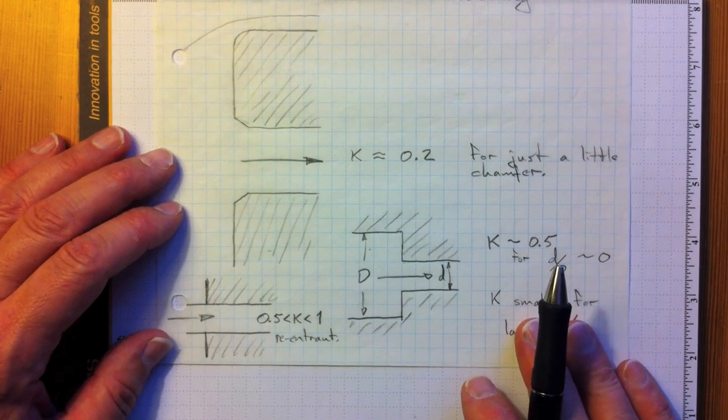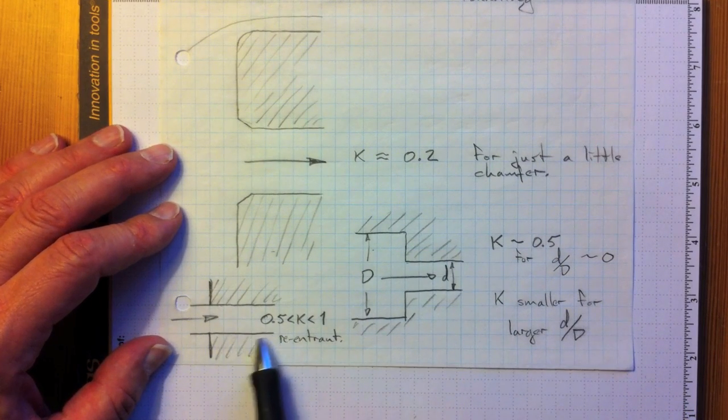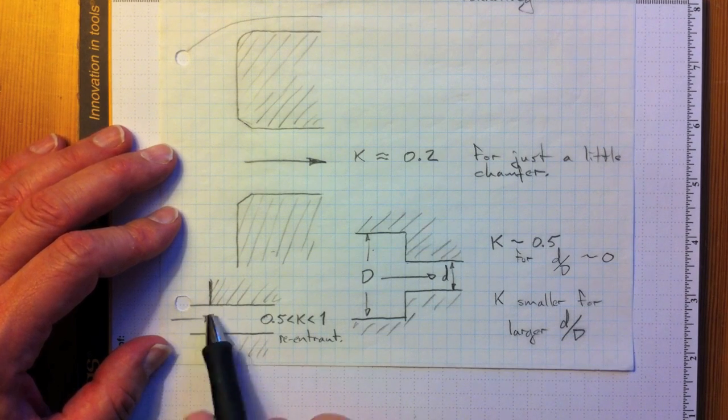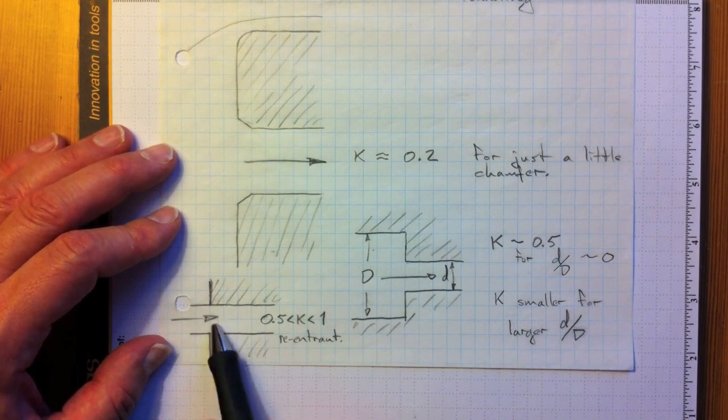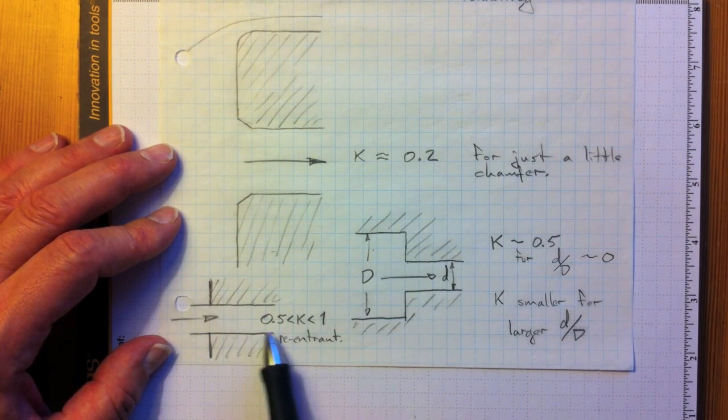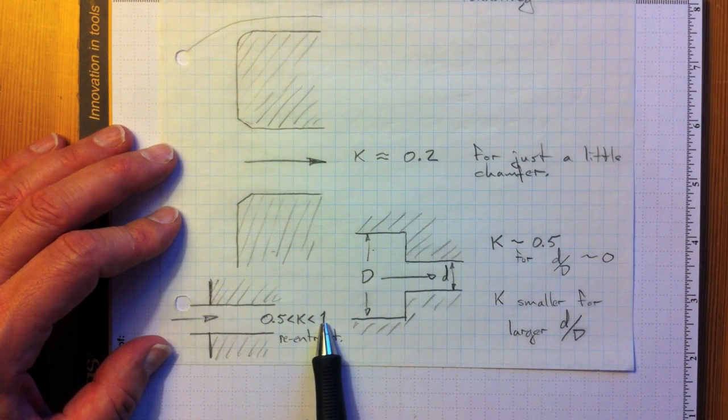Here are some other examples of minor loss coefficients. If we have a reentrant entry, that is a pipe that sticks out into the reservoir, that creates even more recirculation and even messier entrance flow. And depending on the geometry of this situation, the k factor will be somewhere between 0.5 and 1.